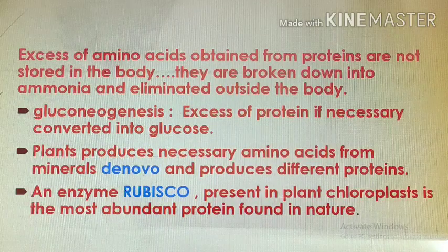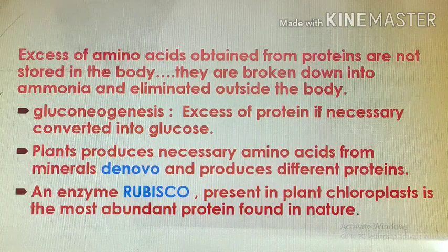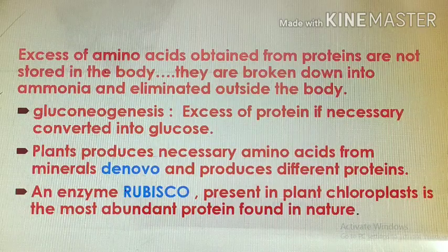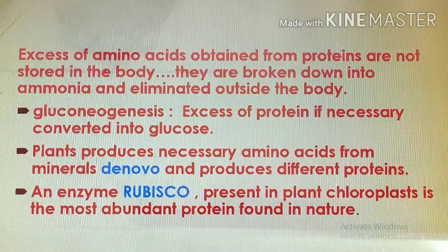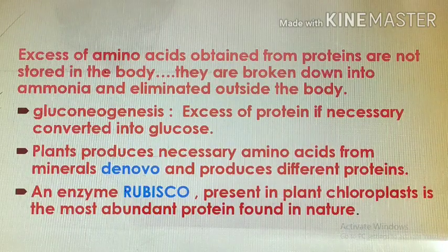These proteins are first converted into glucose, and this process of conversion of protein into glucose is called gluconeogenesis. Plants produce the necessary amino acids from minerals de novo, and these minerals are used to produce different proteins by the plant. An enzyme RuBisCO is present in the plant chloroplast and it is the most abundant protein found in nature.